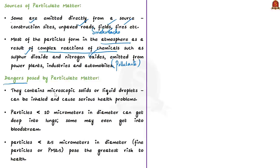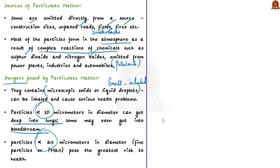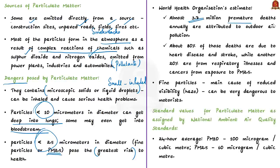Particulate matter contains microscopic solids or liquid droplets so small they can be inhaled and cause serious health problems. Particles less than 10 micrometers in diameter can get deep into the lungs and some may enter the bloodstream. Particles less than 2.5 micrometers in diameter — fine particles or PM2.5 — pose the greatest risk to health. According to the World Health Organization, almost 3.7 million premature deaths annually are attributed to outdoor air pollution, with about 80% due to heart disease and stroke, and 20% from respiratory illness and cancers related to PM2.5 exposure.